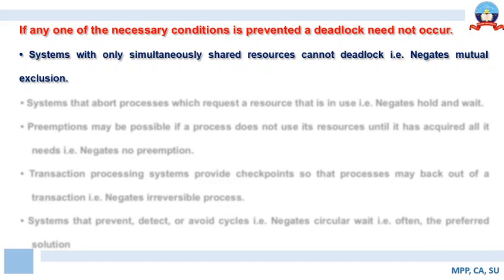Mutual exclusion means there has to be a resource utilized in a non-sharable mode, which implies that if a process is allocated the resource, no other process can be allocated that particular resource. So here we are trying to negate mutual exclusion — systems with only simultaneously shared resources cannot deadlock.